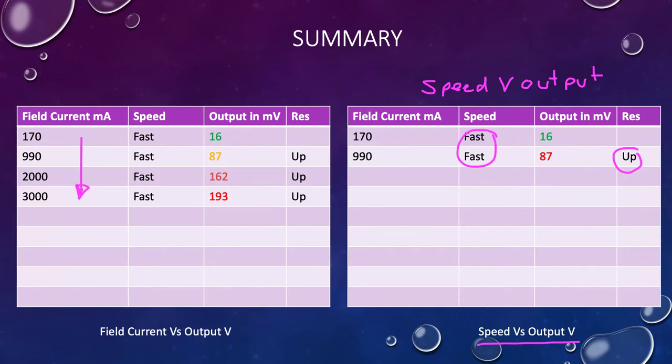The one on the left hand side, we simply increased the current in the field. We maintained the speed at fast all the way through, same speed all the way through. And what do we end up with? The output got higher and higher and higher. Field current versus output. The stronger the magnetic field, the larger your output voltage will be. The faster that you spin through that magnetic field, the higher the output will be as well.